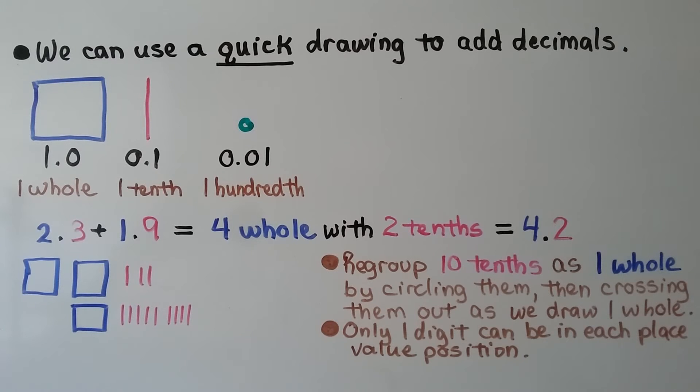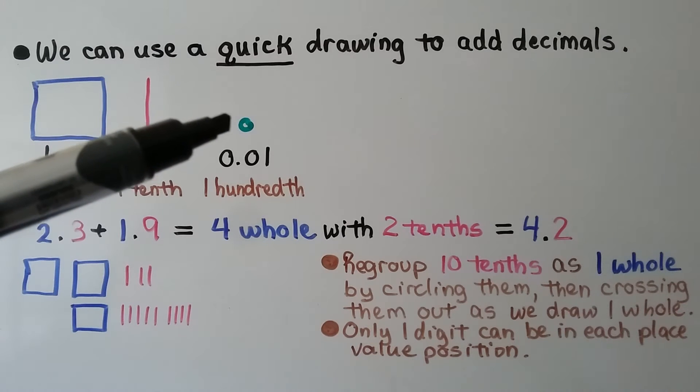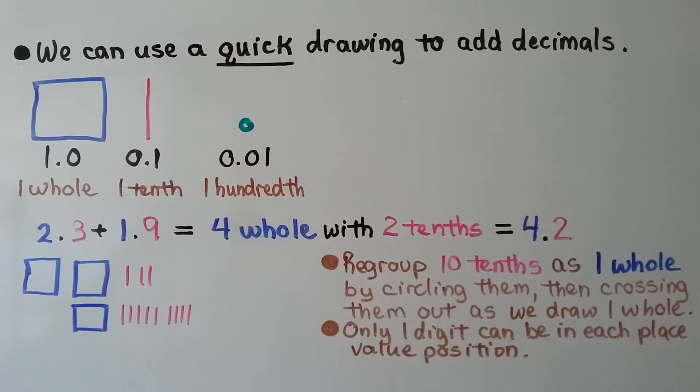We can use a quick drawing to add decimals. We can use a square for 1 whole, a line for 1 tenth, and a little small circle for 1 hundredth.